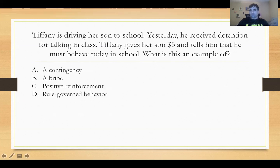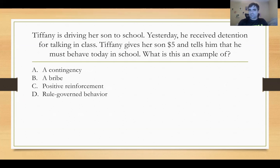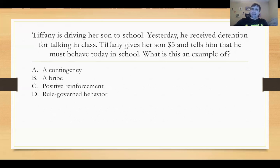Question: Tiffany is driving her son to school. Yesterday, he received detention for talking in class. Tiffany gives her son five dollars and tells him that he must behave today in school. What is this an example of? Think about it — is this a contingency? Did Tiffany set up an if-then statement? An if-then statement would have been: if you behave today in school, then you get five dollars. What did Tiffany do? Tiffany reversed it — she gave him the five dollars and then said, now you have to behave. That is incorrect.